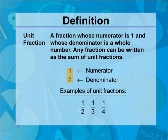The general form of a unit fraction is 1 over b, where the numerator is 1 and the denominator is b, where b is not equal to 0.